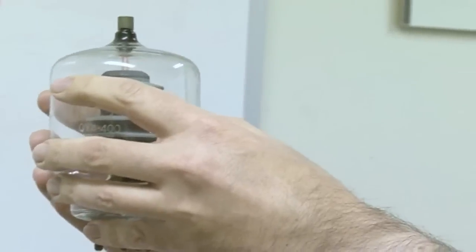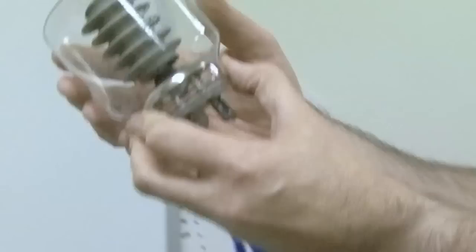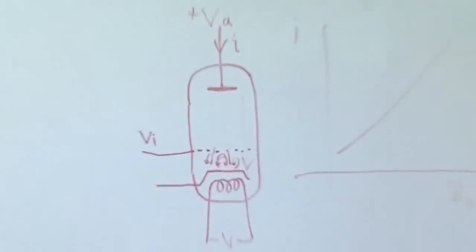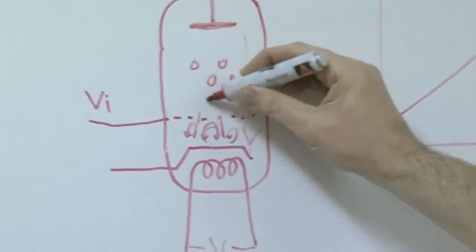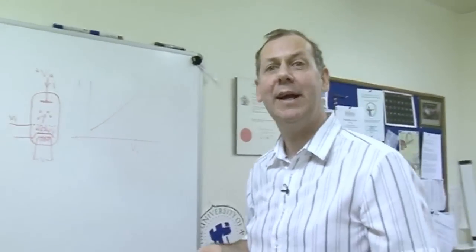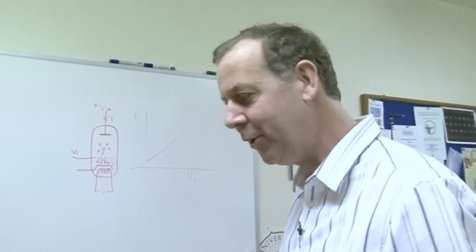Why the vacuum? Because if we had air molecules inside there, then the electrons will scatter off and we won't get any flow at all.